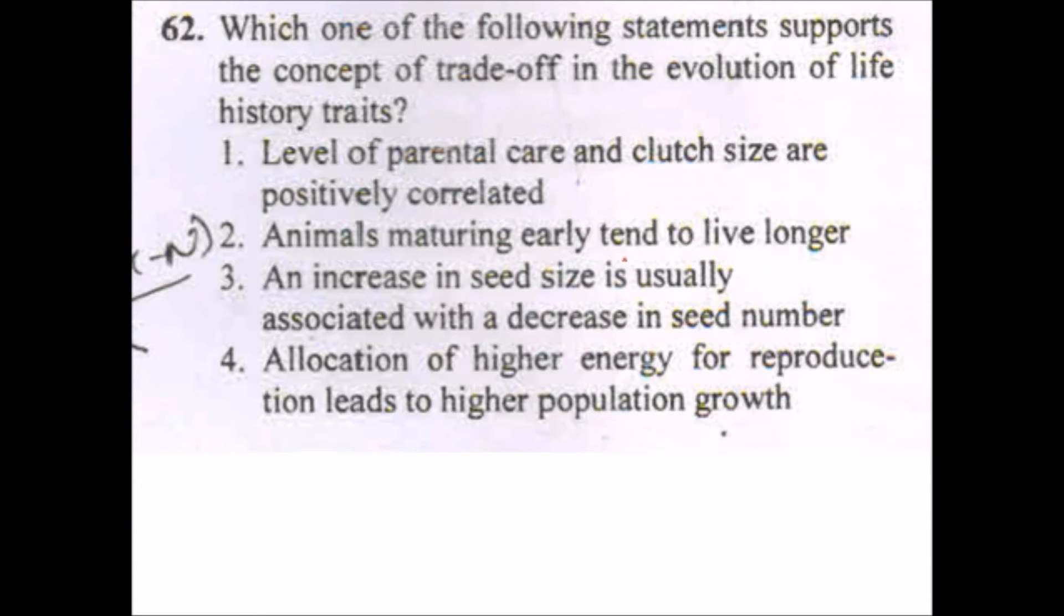So this will be wrong. Animals maturing early tend to live longer - it doesn't mean that. You can see even in your surroundings that a dog can mature very early but it has very fewer lifespan in comparison to us where we take more time for maturation. An increase in seed size is well associated with a decrease in seed number - this is true.